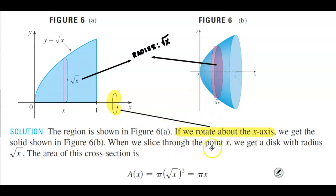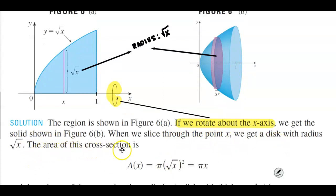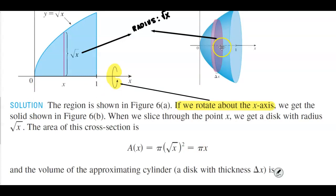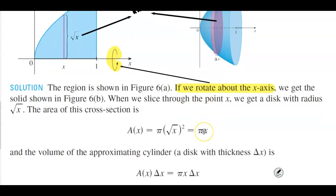When we slice through the point x, we get a disk with radius √x. So the area of this cross section is the following: the area is taking π times the radius squared. Squaring √x gives you x, so therefore the area of that cross section is πx.